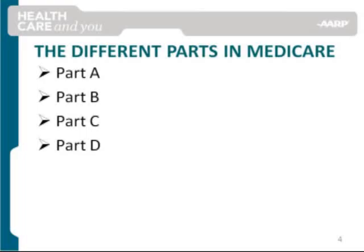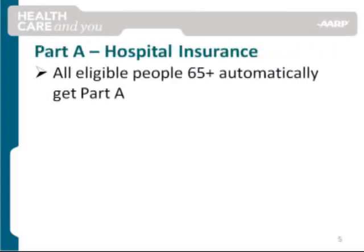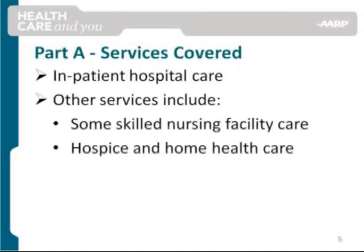Let us now talk about each of these parts in more detail. One of our medical needs involves hospitals, and Medicare Part A covers hospital expenses. Almost all people 65 and over are automatically eligible for Medicare Part A if they are eligible for Social Security and/or railroad retirement benefits, which means that they or their spouses already paid for Part A through payroll taxes during their working life. Medicare Part A helps cover inpatient hospital care and other services, including some skilled nursing facility care, hospice, and home health care services.